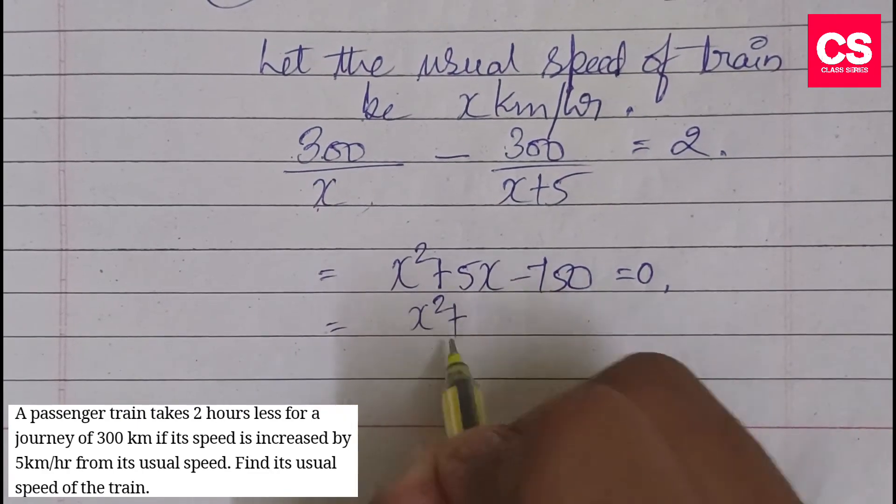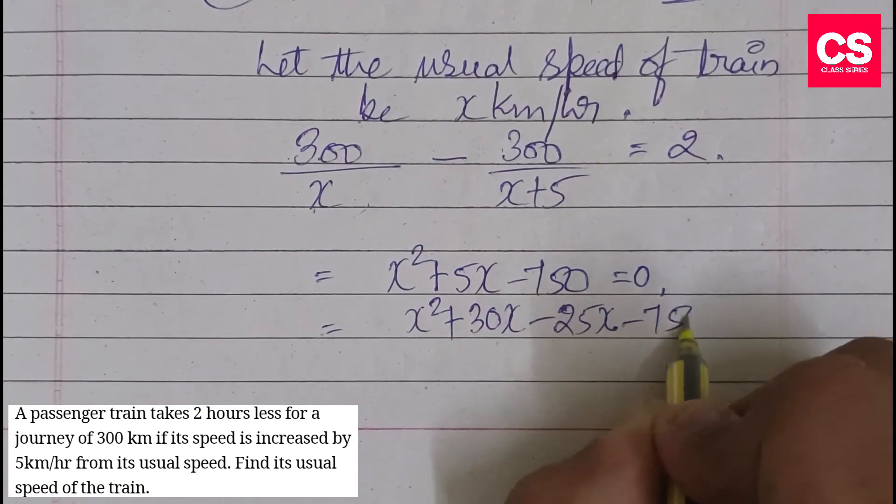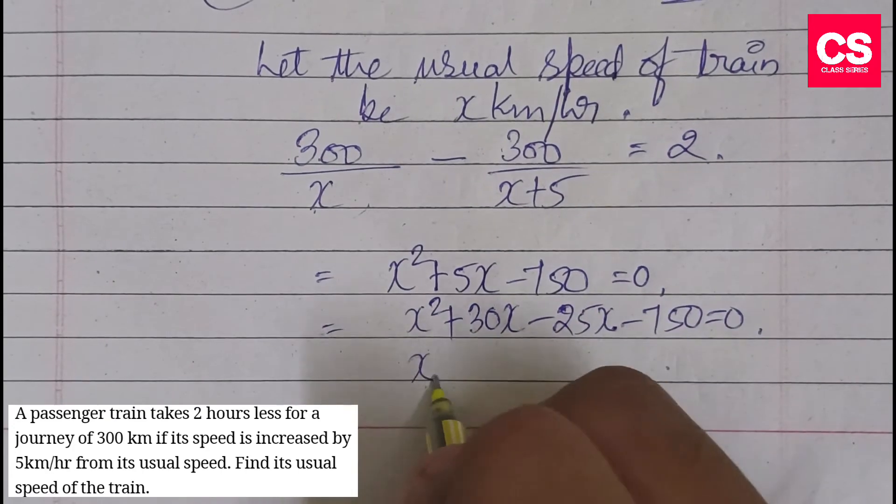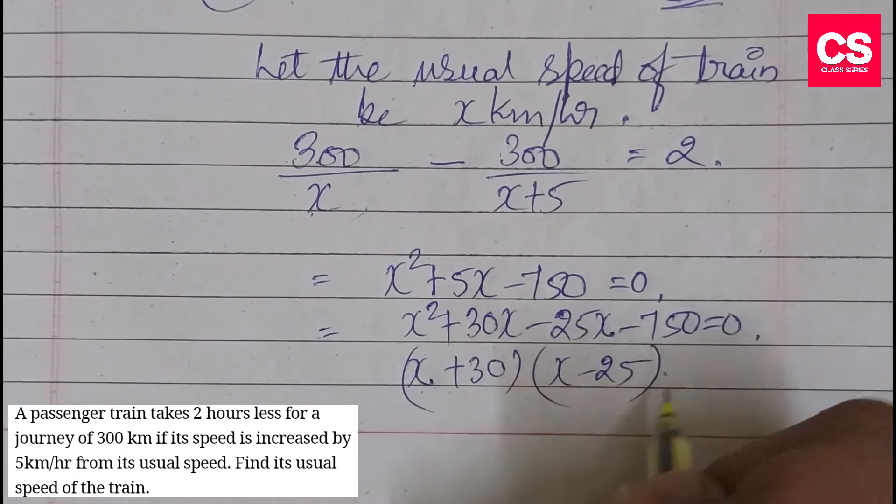x² + 30x - 25x - 750 = 0, which gives us (x + 30)(x - 25) = 0.